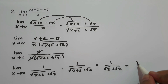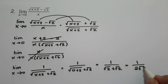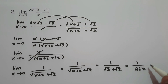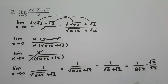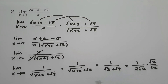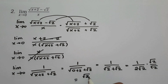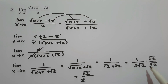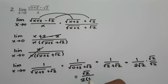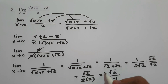So this time, let's substitute the value of x. We have 1 over square root of 0 plus 2, that is square root of 2, plus square root of 2. That gives 1 over 2 square root of 2. Then, let us rationalize to eliminate the radical sign on the denominator by multiplying square root of 2 on the numerator and denominator. So we have 1 times square root of 2, that is square root of 2, over 2 times square root of 2 times square root of 2, which is 2 times 2 equals 4. So our final answer is square root of 2 over 4.